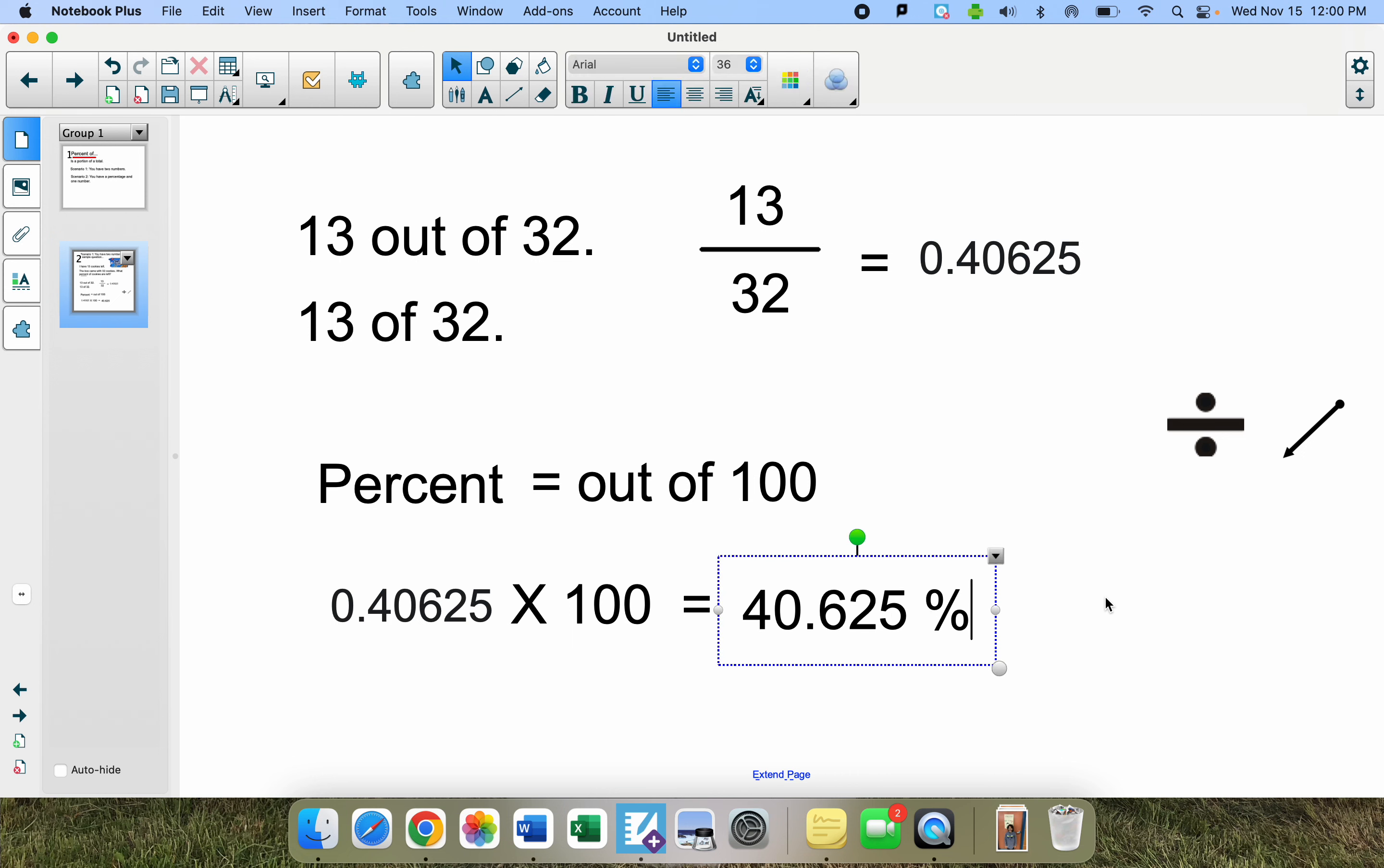If the teacher asks you to round it to the nearest tenth, then you'd have to look at the tenths place, look at the number to the right of it, which is only a two. That means the six won't go up. The six will stay a six because its neighbor to the right is less than five. So if you had to round this, your final answer would be 40.6%.